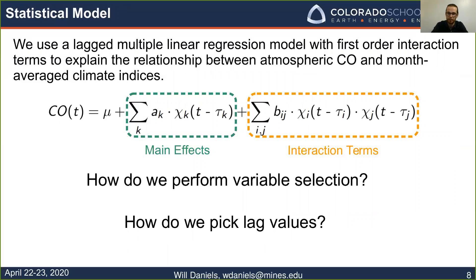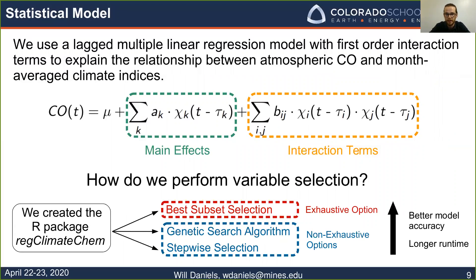At this point you might ask how we perform variable selection — that is, how we decide which climate indices to put in our model out of the four, and how we pick those lag values, those tau-k's. For variable selection, we have created an R package called reg.climatechem, which is a wrapper for three different variable selection algorithms: stepwise selection, a genetic or stochastic search algorithm, and best subset selection. As you move from the bottom to the top of that list, you get better model accuracy but longer runtimes, giving researchers with different computational resources three options.